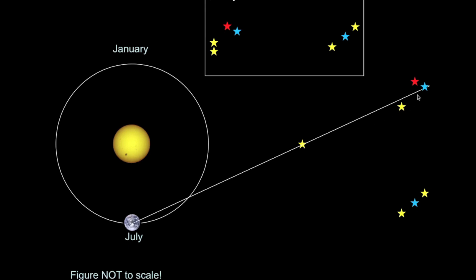It will appear to be in front of the three stars, the yellow, red and blue star, and so our view would be like this. The nearby star will appear to have shifted from the rightmost part of our view to the leftmost part.